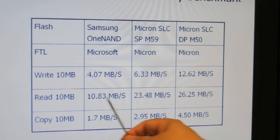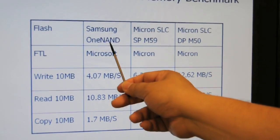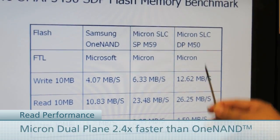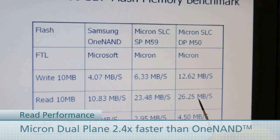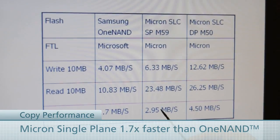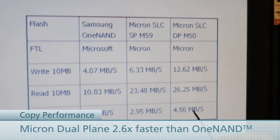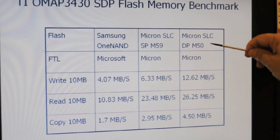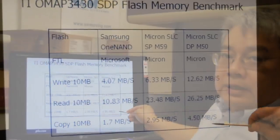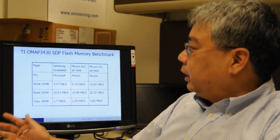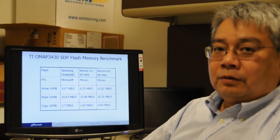Looking at read performance: it improved from 10.83 with OneNAND, to 23.48 with Micron software and single-level NAND, and the dual-plane gives further improvement to 26.25. Copy performance went from Samsung 1.7, to Micron SLC at 2.95, then dual-plane SLC to 4.5. The overall message is that Micron software with a dual-plane device gives you the best performance today. We have cases where customers already in the design cycle are willing to reevaluate the solution given the increased performance on read, write, and copy.